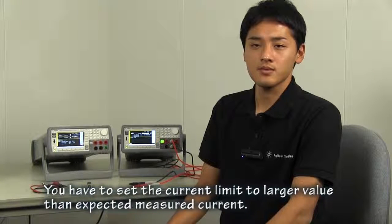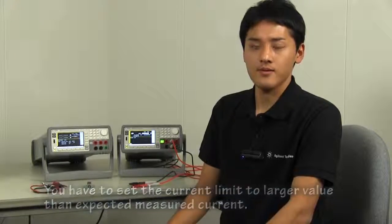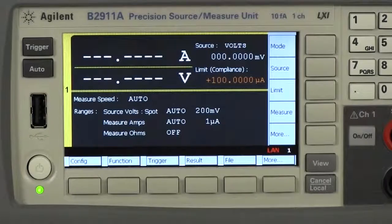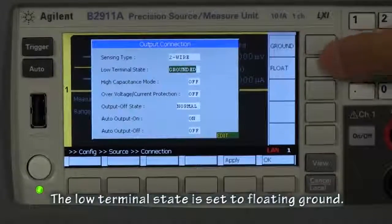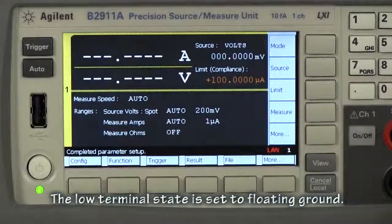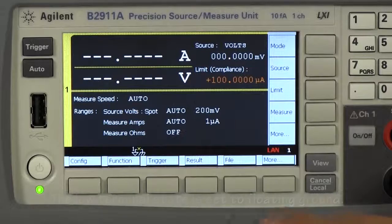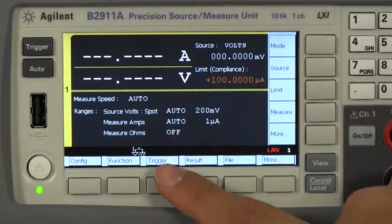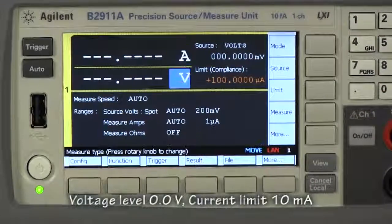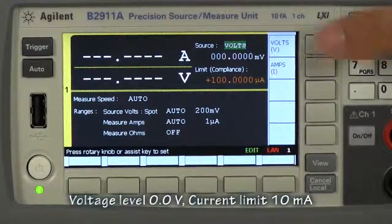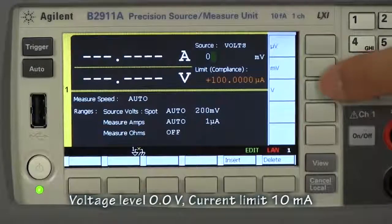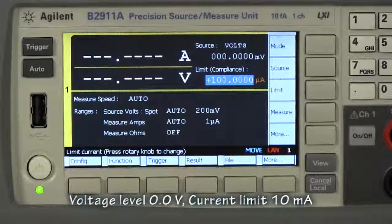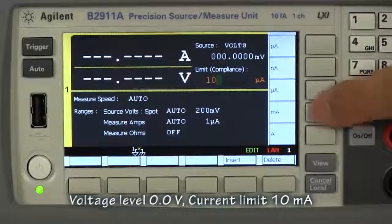I'll show you how to set output conditions with the front panel. I have to set the low terminal state to floating first. This symbol indicates floating state. And then I'll set the source mode to voltage mode, voltage level to 0V, current limit to 10mA.